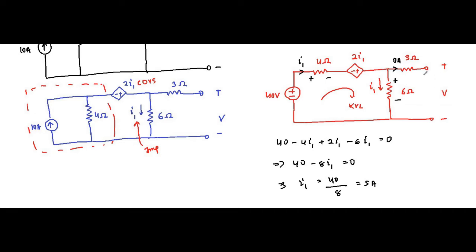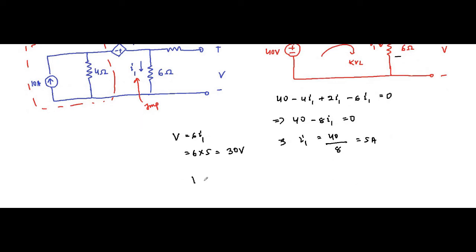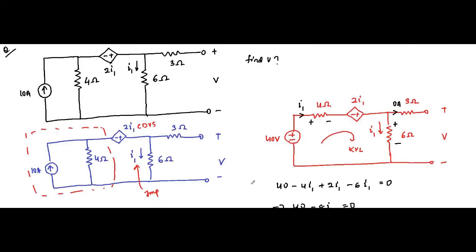Now looking at the voltage across the open-circuit terminal, it equals 6i1 only, because 0 ampere is flowing through the 3 ohm resistor — so there is no voltage drop across it. The only voltage drop appearing is across the 6 ohm resistance. Therefore, V equals 6 times i1, which equals 6 into 5, that is equal to 30 volt.